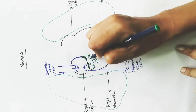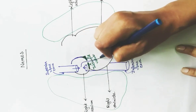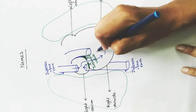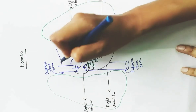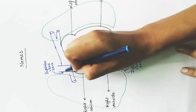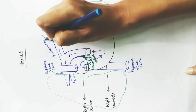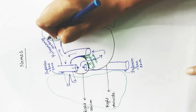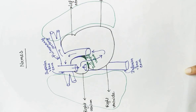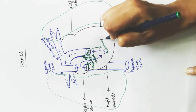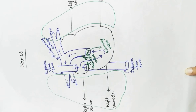There is a valve between the right atrium and the right ventricle called the tricuspid valve. Through this valve, carbon dioxide-rich blood enters the right ventricle. From the right ventricle, this blood travels to the lungs via the pulmonary artery — an artery because it carries blood away from the heart, and pulmonary because it goes towards the lungs. There is also a pulmonary valve at this junction, acting as the gate to the lungs.